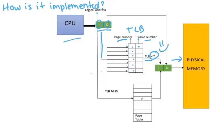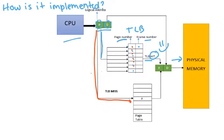A hit is good. Now, if it walks through the translation look-aside buffer and doesn't find the page number there, we go back down to the page table. We look it up in the page table, find the frame number, and then go into physical memory. That's a miss.